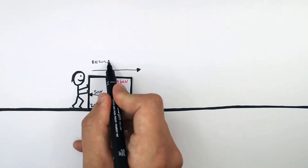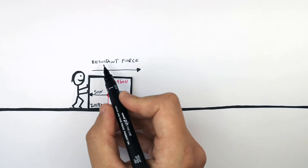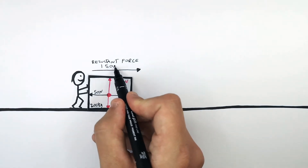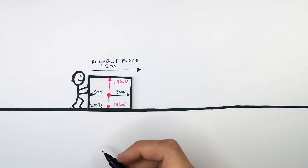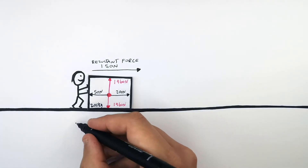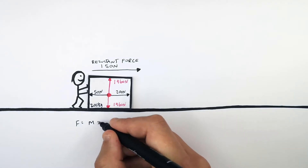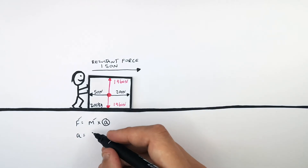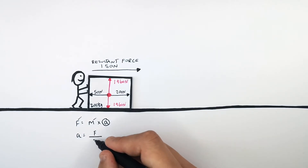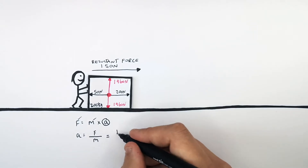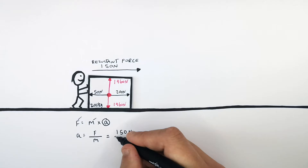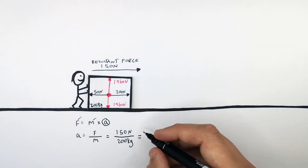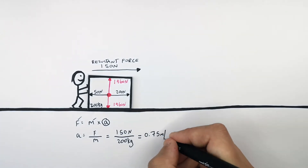So the resultant force acting on the box is going to be 200 newtons minus 50 newtons, which equals 150 newtons forwards. We want to calculate the acceleration at which this box is moving. Recall the equation F equals M times A; rearranging for A gives acceleration equals force divided by mass. Substituting the numbers: the resultant force is 150 newtons divided by 200 kilograms, giving an acceleration of 0.75 meters per second squared.